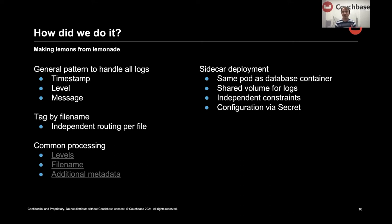So what else did we do? All the logs are wildly inconsistent but they follow a similar pattern — every log has a timestamp, every log pretty much has a log level, and message is just everything that's not those other bits. So keep it simple and generic so we can parse everything with it. We then tag by file name so we can route different processing and route to different endpoints by file name — quite key for the audit log. Added common processing as well — the levels were wildly disparate: info in different cases, four-character 'debg' rather than 'debug'. So I added processing to standardize that to constrained enums, which makes it work really well in things like Grafana — you can filter on one value rather than all the variants.